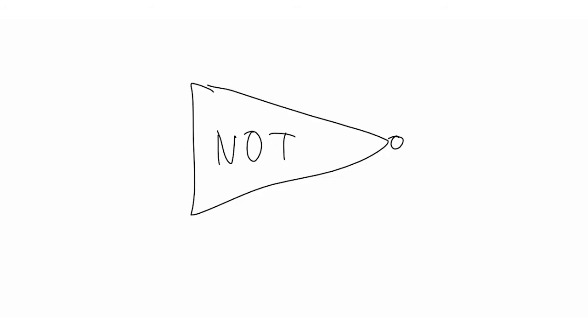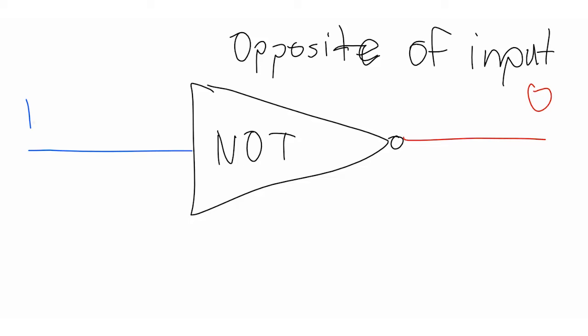Finally, we have what is known as a NOT gate, also known as an inverter gate. It simply takes your input and outputs the opposite. If you input 1, it outputs 0, and vice versa.